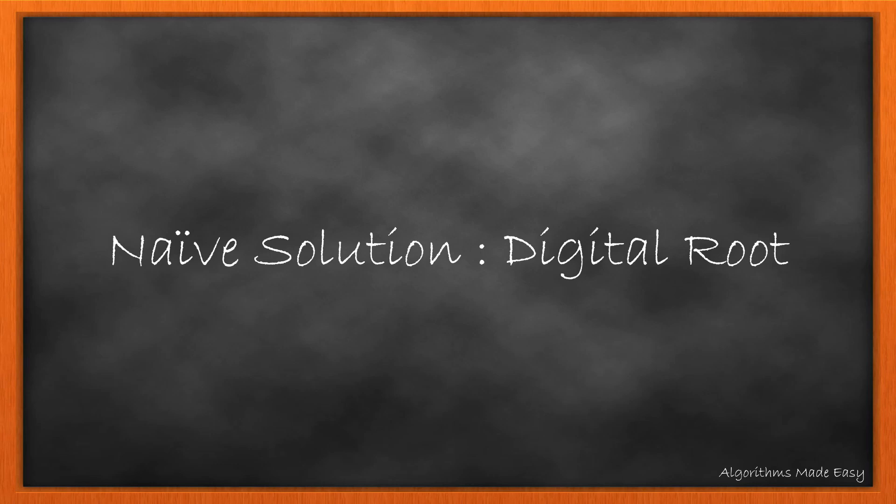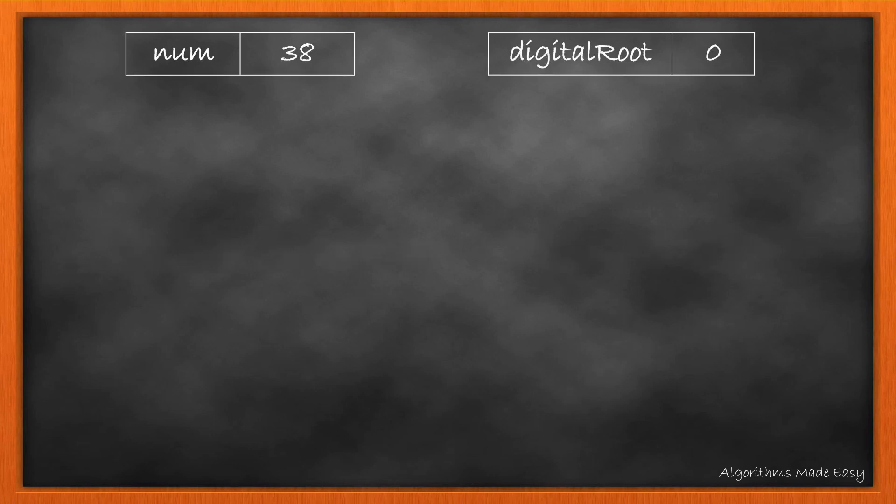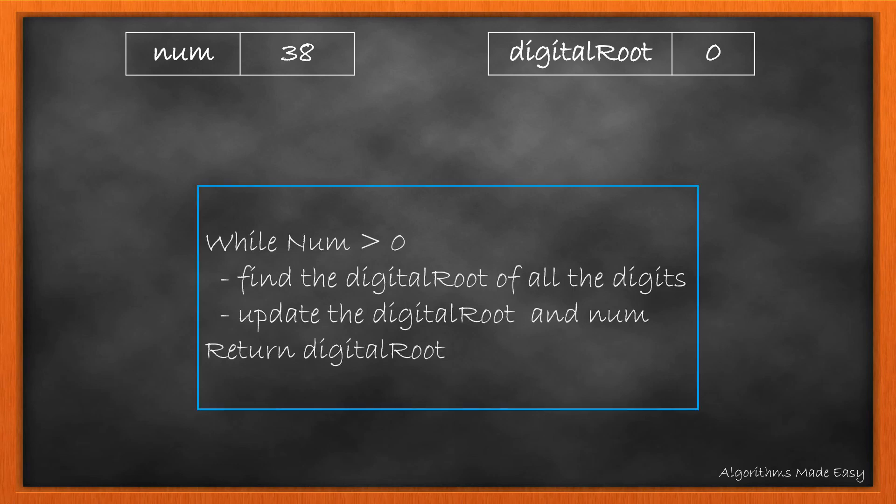Let's start with the naive solution. Let's find the digital root for 38. Initially, the digital root will be 0. We will apply a loop on number and find the digital root until the sum of its digits reduces to a single digit. In each iteration, we will update the digital root and the number.